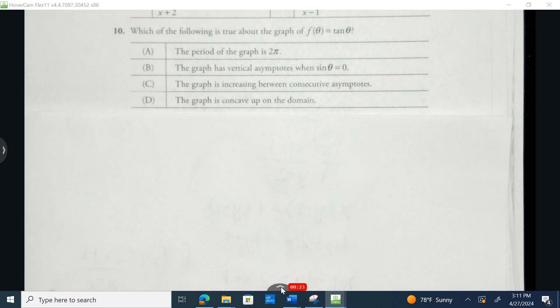Right away, I know I can eliminate A because I know a period length for sine and cosine is 2π, but a period length for tangent and its reciprocal cotangent is only π.